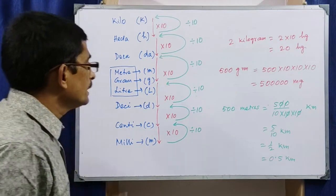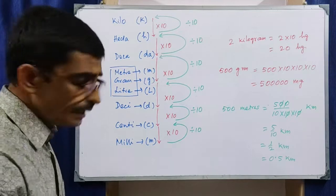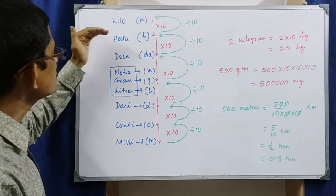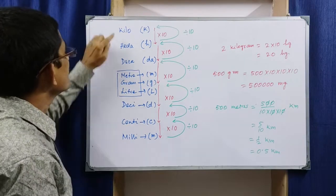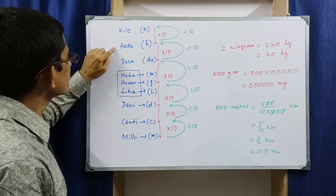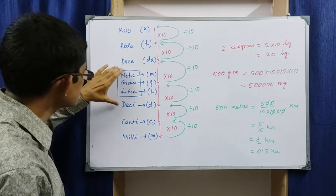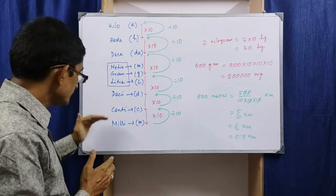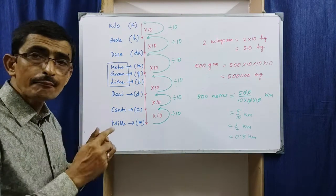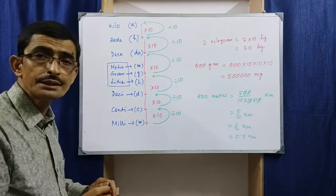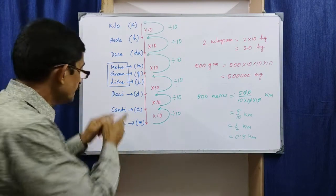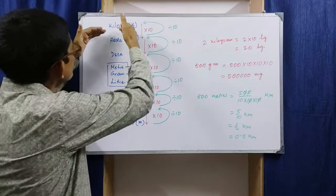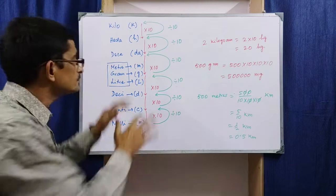So these are the conversions. Any subsequent step is the submultiple of the previous step. In this chart, every upper part is bigger than the lower part and is a multiple of it. Every lower step is the submultiple of the upper part — milli is the submultiple of centi, centi of deci, and so on. There are even bigger units than kilo and even smaller units than milli, but we will remember this part only.